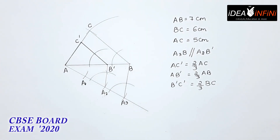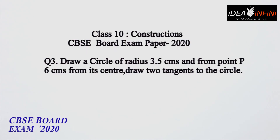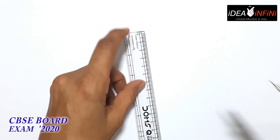Let's move on to another question. हमारा next question है circle का, जिसमें circle पर 2 tangents बनाने हैं एक external point से। Draw a circle of radius 3.5 cm and from point P, 6 cm from its center, draw 2 tangents to the circle।